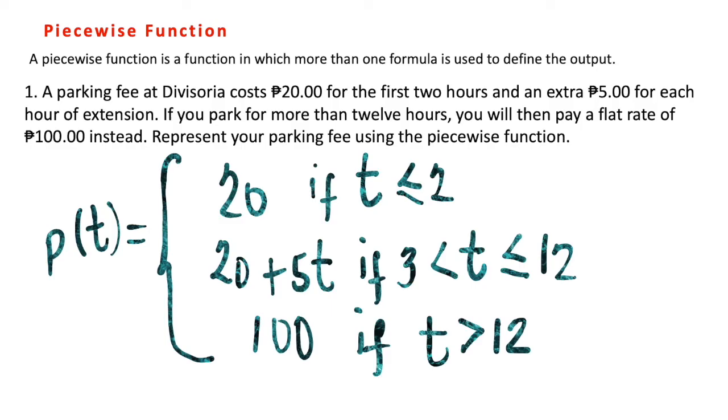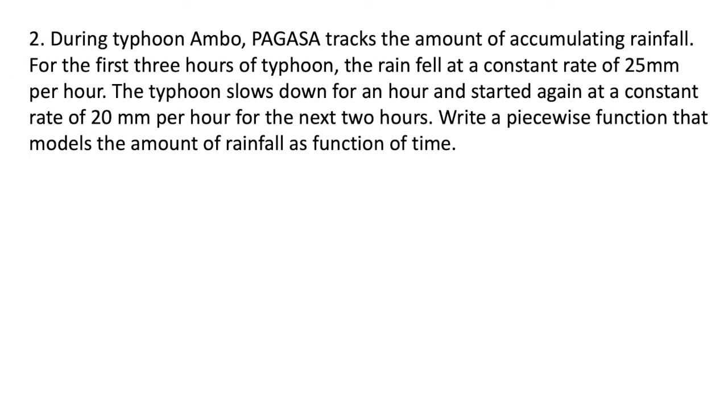Our next example: Example number two. During Typhoon Ambo, PAGASA tracks the amount of accumulating rainfall. For the first three hours of typhoon, the rain fell at a constant rate of 25 millimeters per hour. The typhoon slows down for an hour and started again at a constant rate of 20 millimeters per hour for the next two hours. Write a piecewise function that models the amount of rainfall as a function of time.